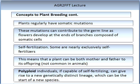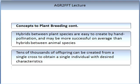The final concept I'd like to introduce here is that hybrids between plant species are easy to create by hand pollination and may be more successful on average than hybrids between animal species. In the introductory lecture on genetics, we looked at the method of hand pollination and you can refer back to those lectures for more details. Tens of thousands of offspring can be created from a single cross to obtain a single individual with desirable characteristics.